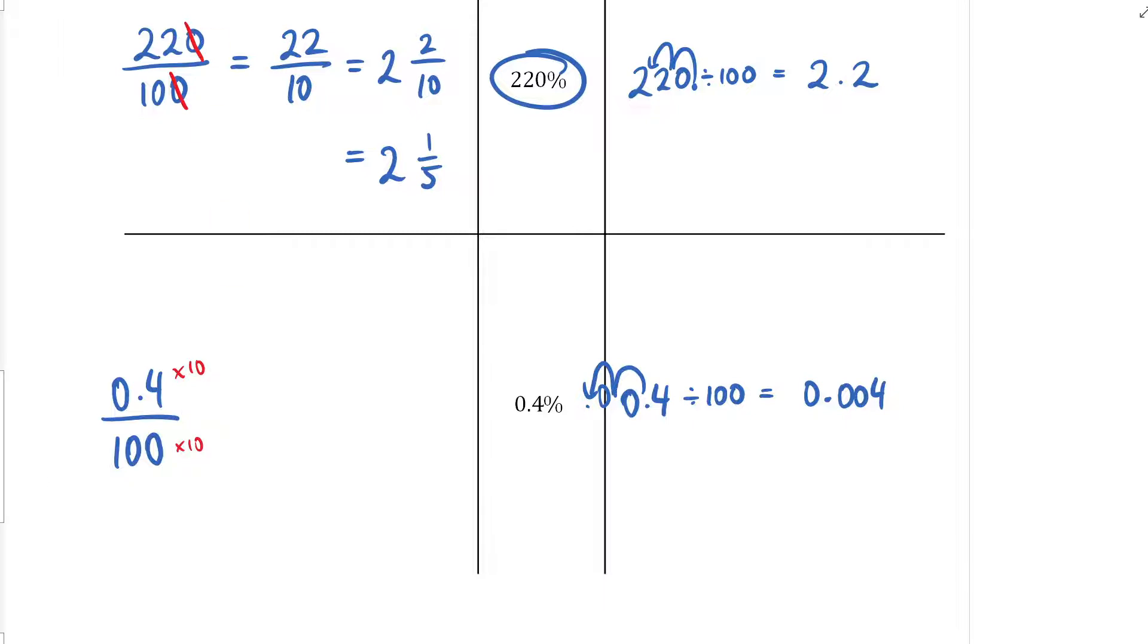By doing that, I end up with 4 on 1000. Now I no longer have a decimal in my numerator, and I can simplify this. I can divide both by 4. What is 1000 divided by 4? It's 250. So my answer is 1 on 250, and that's as simple as it gets.